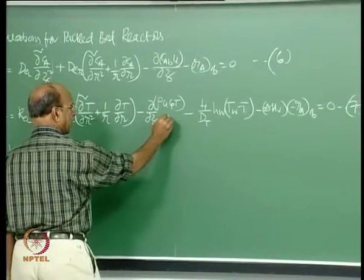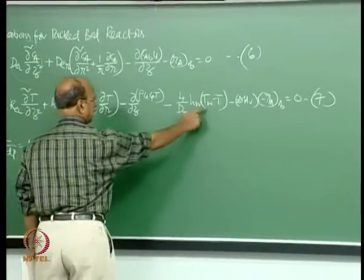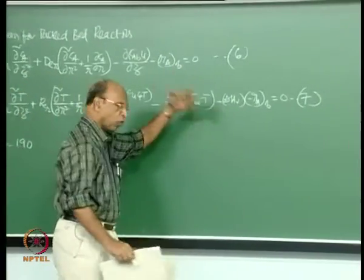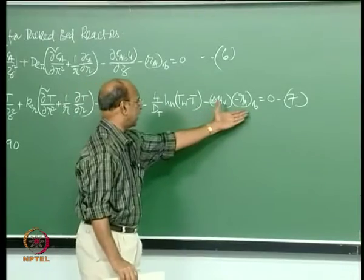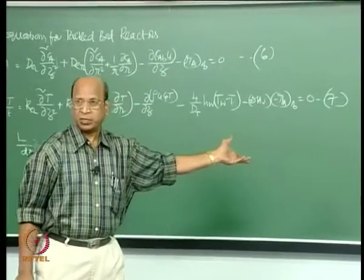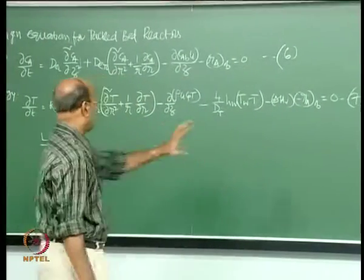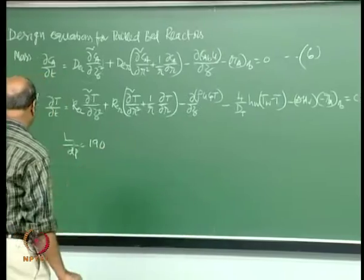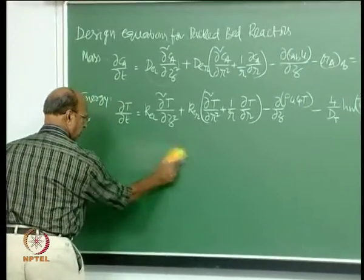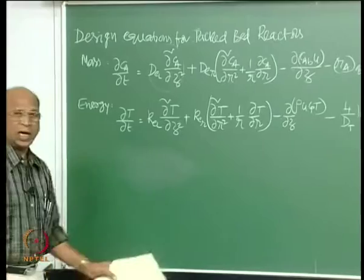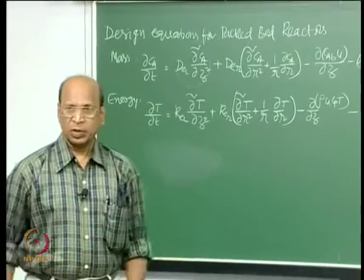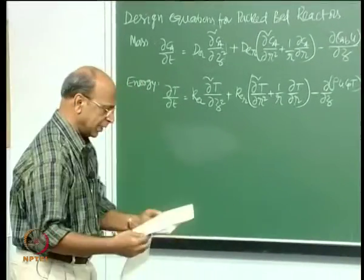That is the reason why this term is very important for us. Most of the time these reactions are either exothermic or endothermic — either you remove or add heat. When you add or remove heat, there will definitely be concentration and temperature gradients across the cross section. This temperature gradient automatically creates concentration gradients. That is why the radial dispersion terms in both the mass and energy equations are much more important than the axial dispersion terms.